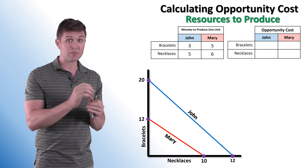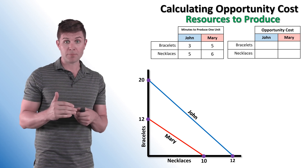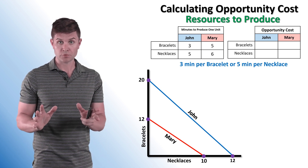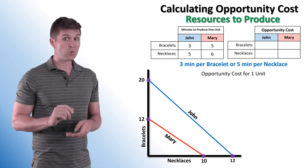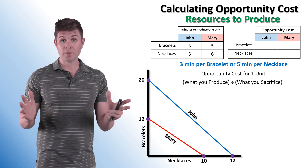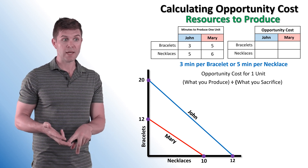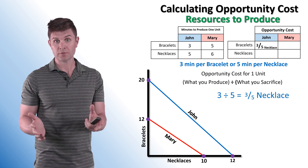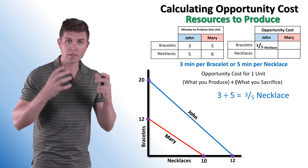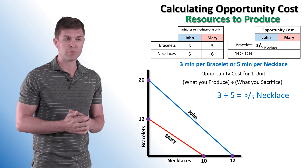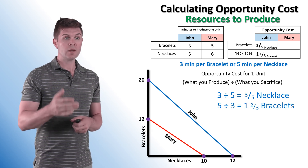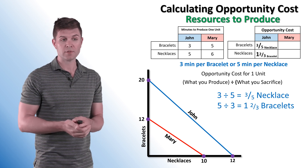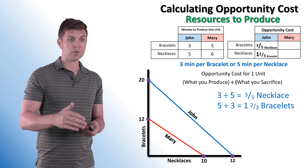When given resources to produce — in this case, minutes to produce one unit — we flip the formula. It takes John three minutes per bracelet or five minutes per necklace. We want the opportunity cost for one unit again, but now the formula is: what we produce divided by what we sacrifice. For bracelets, three divided by five equals three-fifths of a necklace. For the opportunity cost of a single necklace, five divided by three is one and two-thirds bracelets. The opportunity cost of one necklace is one and two-thirds bracelets.